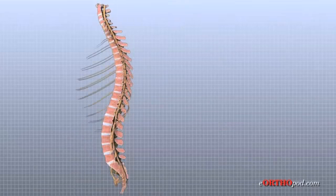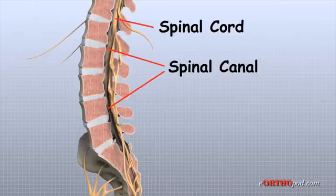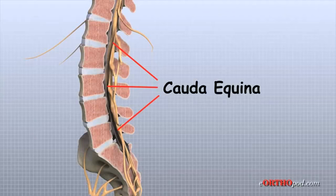Just as the skull protects the brain, the bones of the spinal column protect the spinal cord. The spinal cord extends from the brain to the L2 vertebra. Below this level, the spinal cord splits into a bundle of nerves that goes to the lower limbs and pelvic organs. The Latin term for this bundle of nerves is cauda equina, meaning horse's tail.